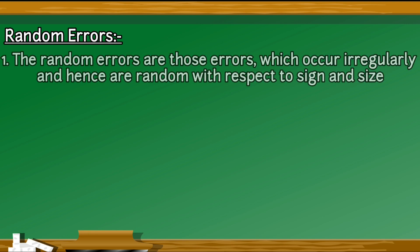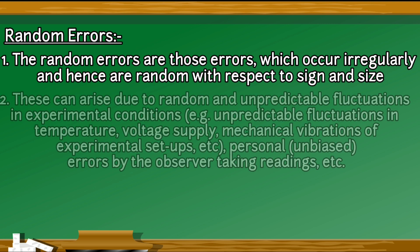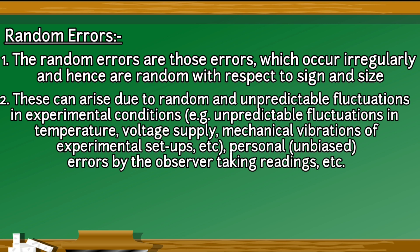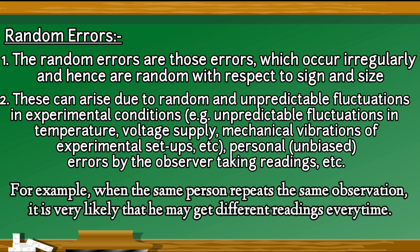Random errors. The random errors are those errors which occur irregularly and hence are random with respect to sign and size. These can arise due to random and unpredictable fluctuations in experimental conditions, for example, unpredictable fluctuations in temperature, voltage supply, mechanical vibrations of experimental setups, etc., personal errors by the observer taking readings, etc. For example, when the same person repeats the same observation, it is very likely that he may get different readings every time.